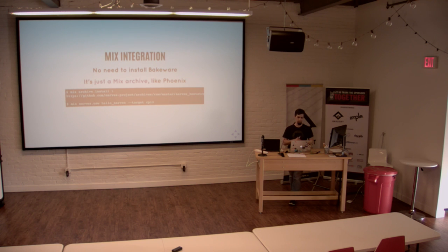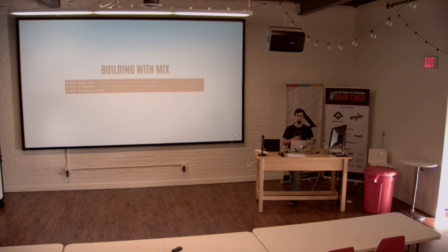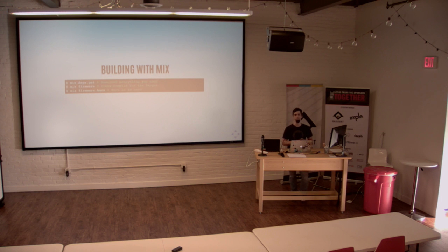With the new mix integration, you don't have to install bakeware anymore — it's just a mix archive like Phoenix. You do a mix archive.install with a magic URL, it installs, and then you get nerves.new like you would see for Phoenix. That generates a skeleton project targeting, say, Raspberry Pi 3, and you can change the target at build time to support multiple platforms. Building is just mix deps.get, and then mix firmware, which is built into mix — NERVS was the first customer of that command. Then firmware.burn burns the image to the SD card.